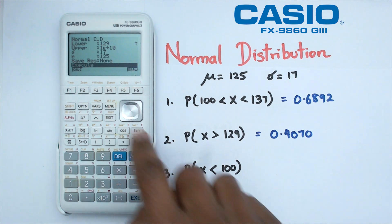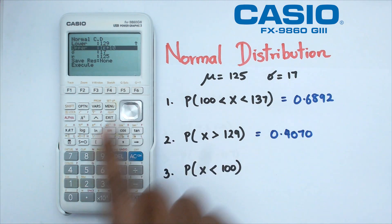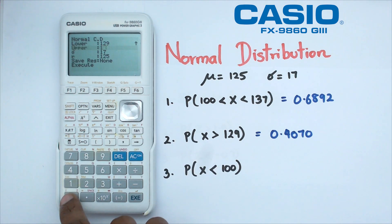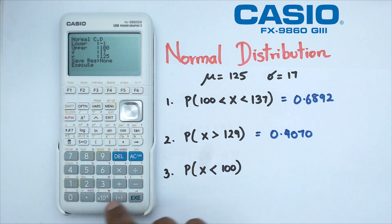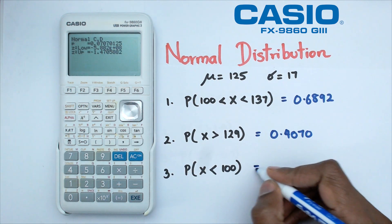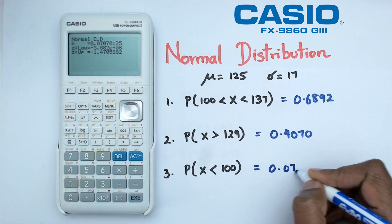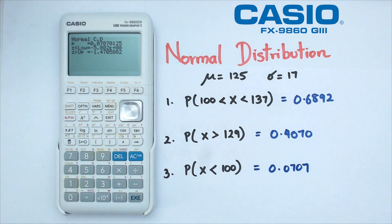And finally, we've got X less than 100. So if X is less than 100, our upper limit is going to be 100, and our lower limit is going to be negative one times 10 to the power of 10. We're going to do this and press enter. And what you can see is the probability of 0.0707.